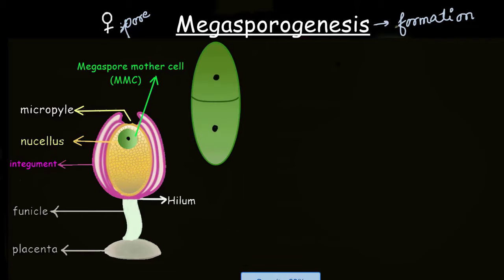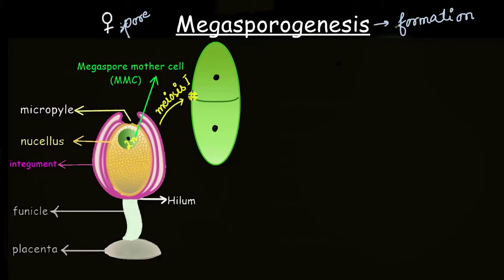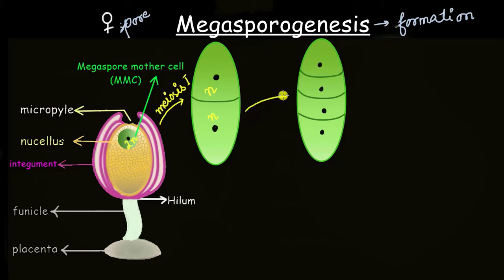After meiosis 1, the MMC divides into two cells, each with half the chromosomes — so if the MMC had 2N chromosomes, each cell now has N chromosomes. Meiosis is completed in two stages: after meiosis 2, which is similar to mitosis, we get four cells, each still with N chromosomes. So by the end of meiosis, the MMC has produced four haploid cells.